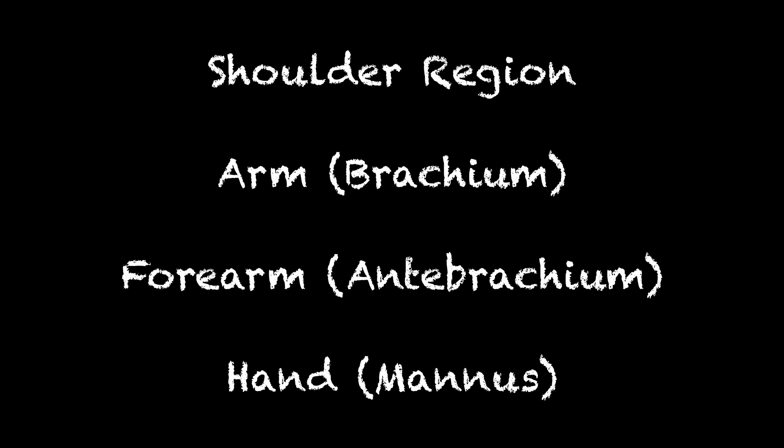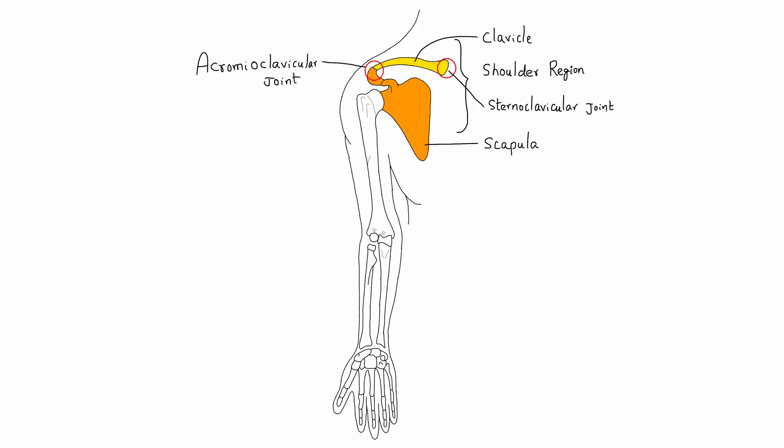For descriptive purposes, the upper limb is divided into four parts: shoulder, arm or brachium, forearm or anti-brachium, and hand. The shoulder region includes the axilla or armpit, the scapular region or parts around the scapula, and the pectoral or breast region on the front of the chest. The bones of the shoulder region are the clavicle and the scapula.